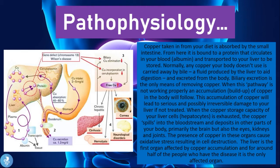Regarding pathophysiology, copper taken in from the diet is absorbed by the small intestine, bound to albumin, and transported to the liver to be stored. Normally, any copper the body doesn't use is carried away by bile and excreted. Biliary excretion is the only means of removing copper. When this pathway is not working properly, a build-up of copper follows, leading to serious and possibly irreversible liver damage. When the storage capacity of hepatocytes is exhausted, copper spills into the bloodstream and deposits in the brain, eyes, kidneys, and joints.